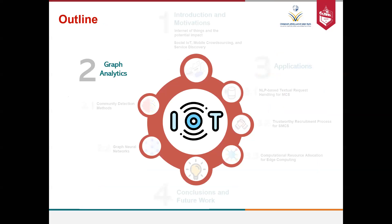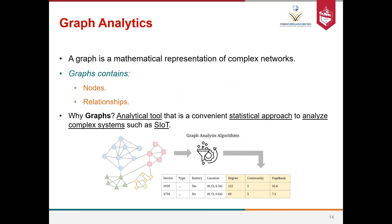Now we understand what Social IoT is. For service discovery through this vast network, one great tool is graph analytics. Graph theory is a well-known field in computer science and mathematics. A graph is a mathematical representation of complex networks — we can represent the IoT network as a graph containing nodes and relationships, or vertices and edges. Graphs are a convenient analytical and statistical approach to analyze complex systems.